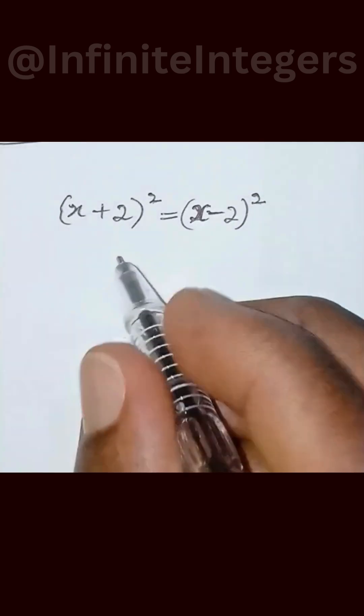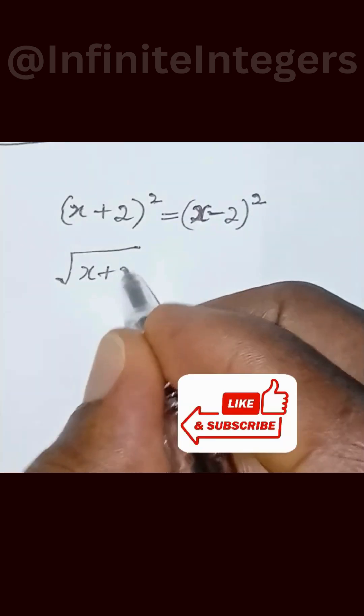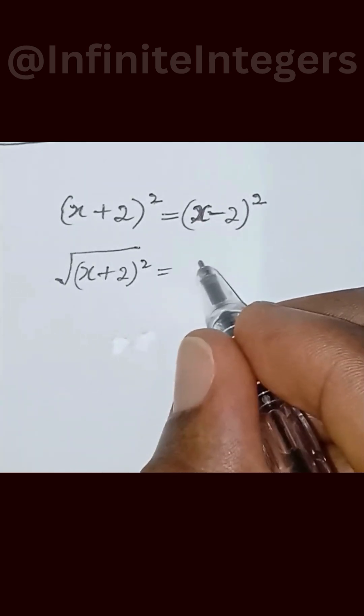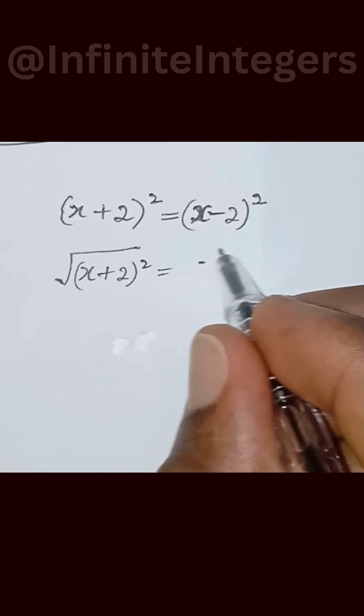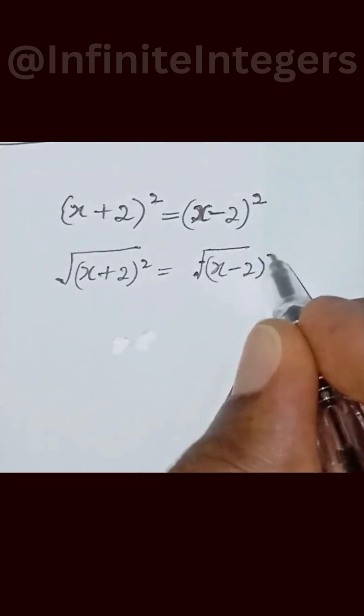First thing we need to do here is to take the square root of both sides. We have square root of x plus 2 raised to power 2, then square root of x minus 2 raised to power 2.